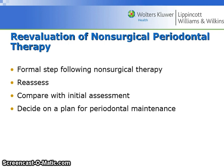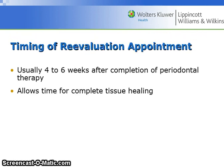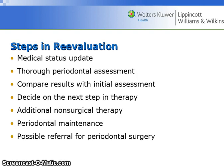Re-evaluation of non-surgical periodontal therapy is a formal step following non-surgical therapy, where one must reassess and compare the results with the initial assessment and then decide on a plan for periodontal maintenance. The timing of the re-evaluation appointment is usually four to six weeks after completion of periodontal therapy to allow time for complete tissue healing. The steps include a status update on medical history, thorough periodontal assessment, comparing results to the initial assessment, and making decisions on the next step — perhaps additional non-surgical therapy, periodontal maintenance, or referral to a periodontist for periodontal surgery.